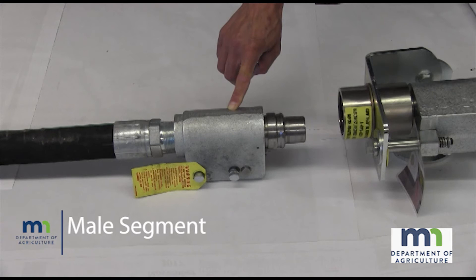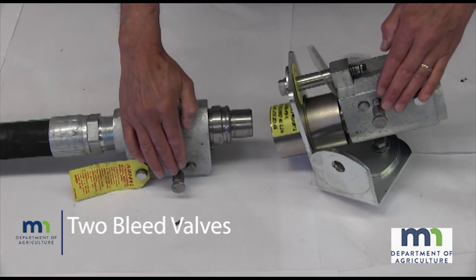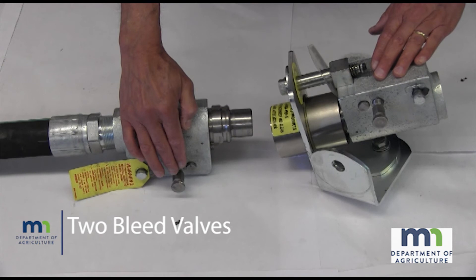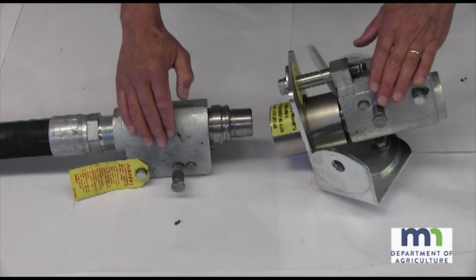Male segment or half of the breakaway coupling device. Two bleed valves: one bleed valve in the male segment or half of the breakaway coupling device and a bleed valve in the female segment.